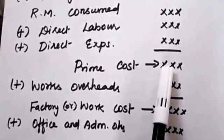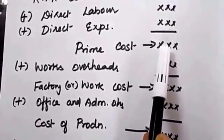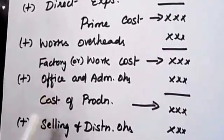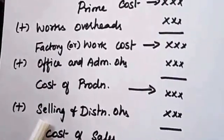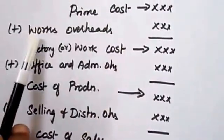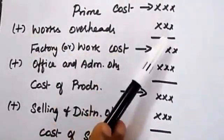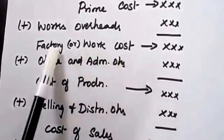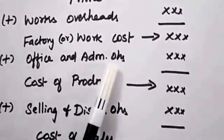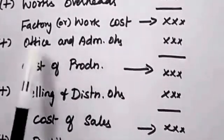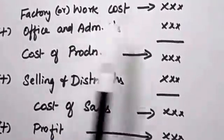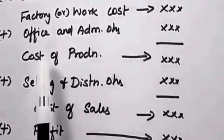After finding prime cost, the next step is to add overheads. There are three types of overheads. First, add factory overheads — also called works overheads — to get factory cost, also called works cost. Then add office and administrative overheads — any indirect expenses related to office and administrative purpose — and after adding this, you will get cost of production.